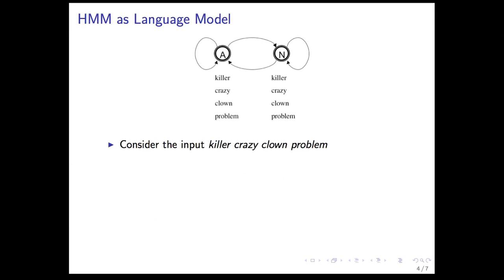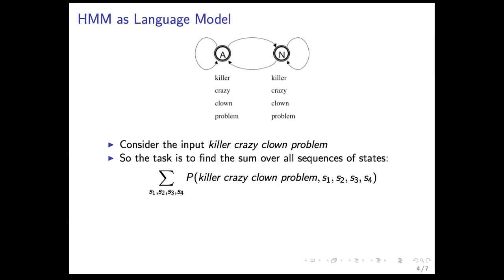If you do that for two words it's possible, you can just write down the sum, do it by hand. But we have run into the same problem that we did with the brute force approach for parsing using HMM. We will end up having to enumerate lots of states. For 'killer crazy clown problem', we end up having 2 to the 4 terms.